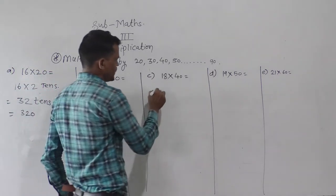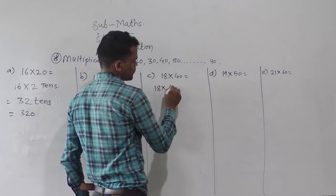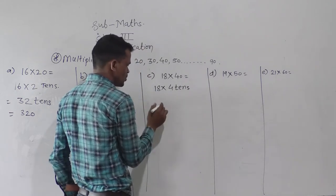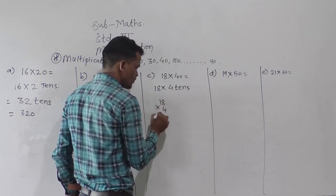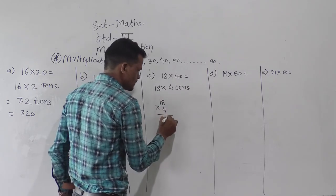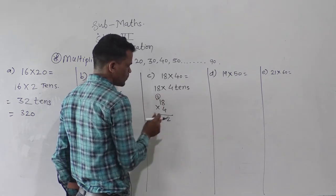Then next 18 into 40, 40 means 4 tens. Now do the multiplication of 18 by 4. 4 eights are 32, 2 right here, 3 carry forward.